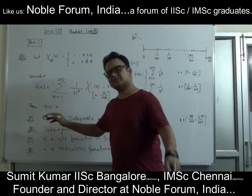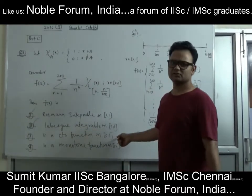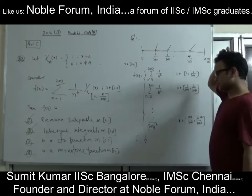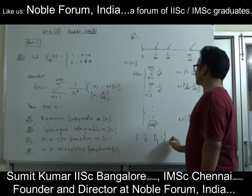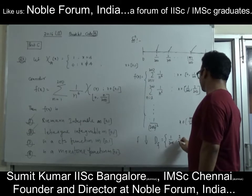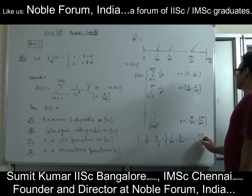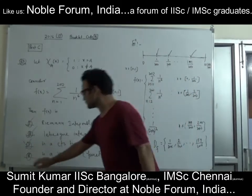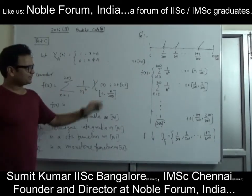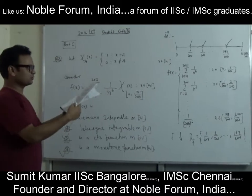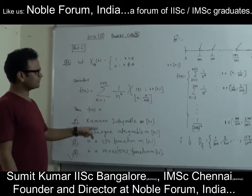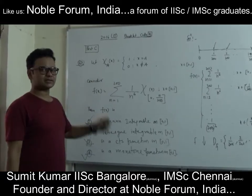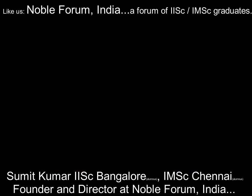Of course, every Riemann integrable function is Lebesgue integrable. The claim that this is a continuous function on [0,1] is false, because the function is discontinuous at precisely the points 1/200, 2/200, ..., 199/200. So the set of discontinuities is {1/200, 2/200, ..., 199/200}. It is not continuous, but it is a monotone function. This explanation took me 2-3 minutes, but in the exam hall it should not take more than 1 minute — be fast, don't make mistakes.